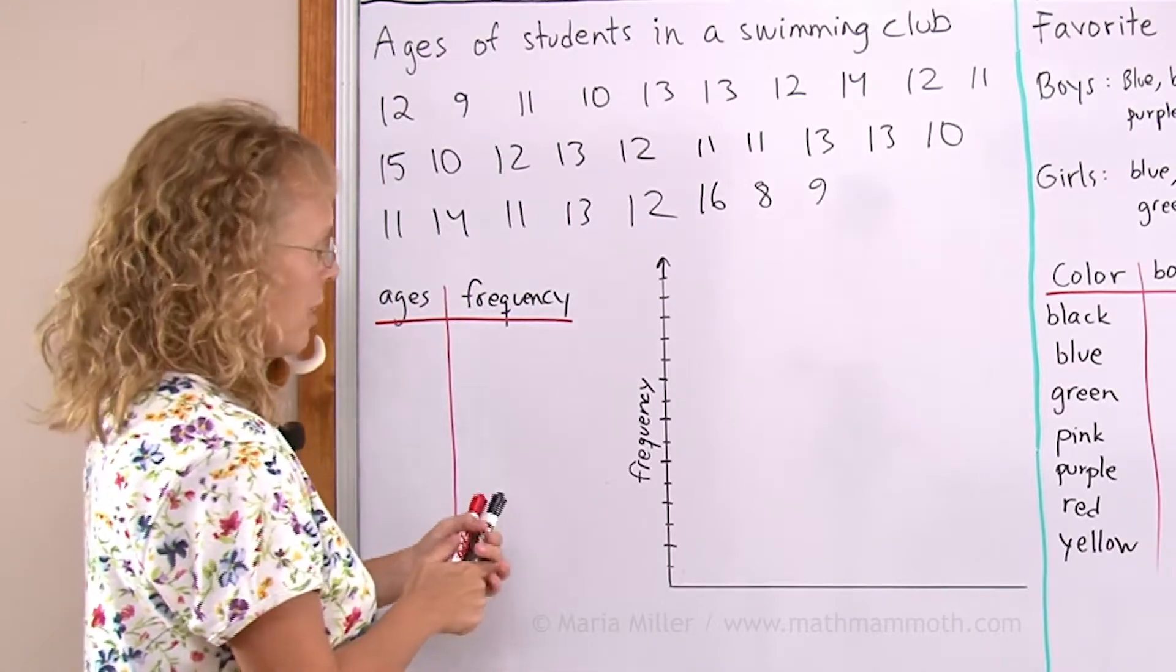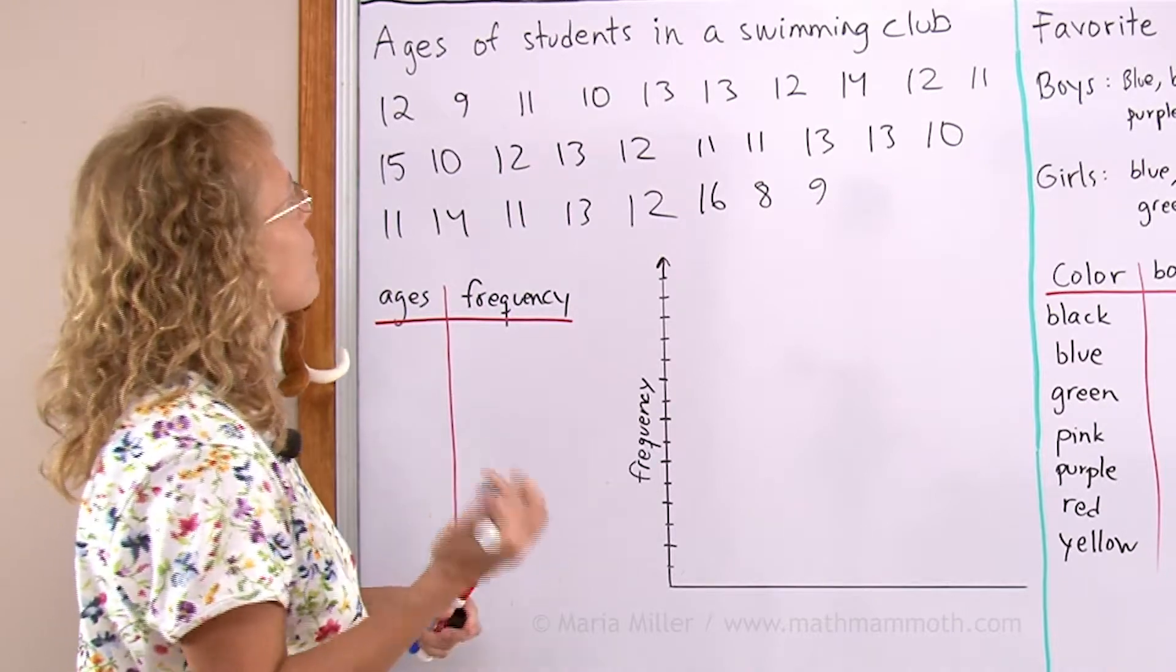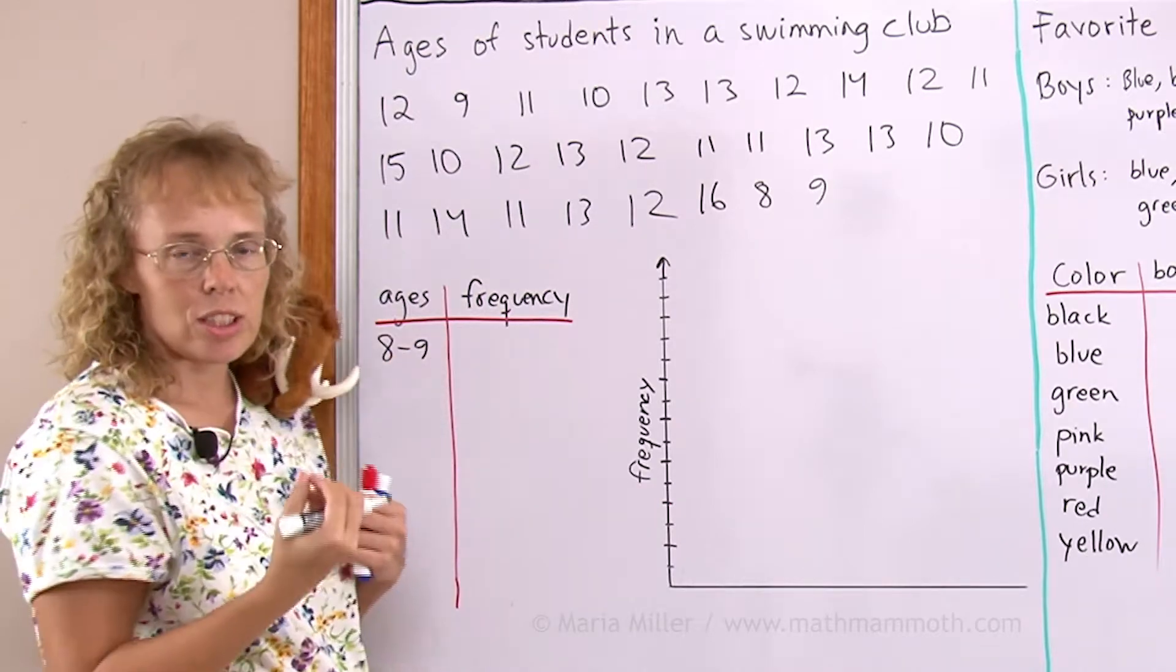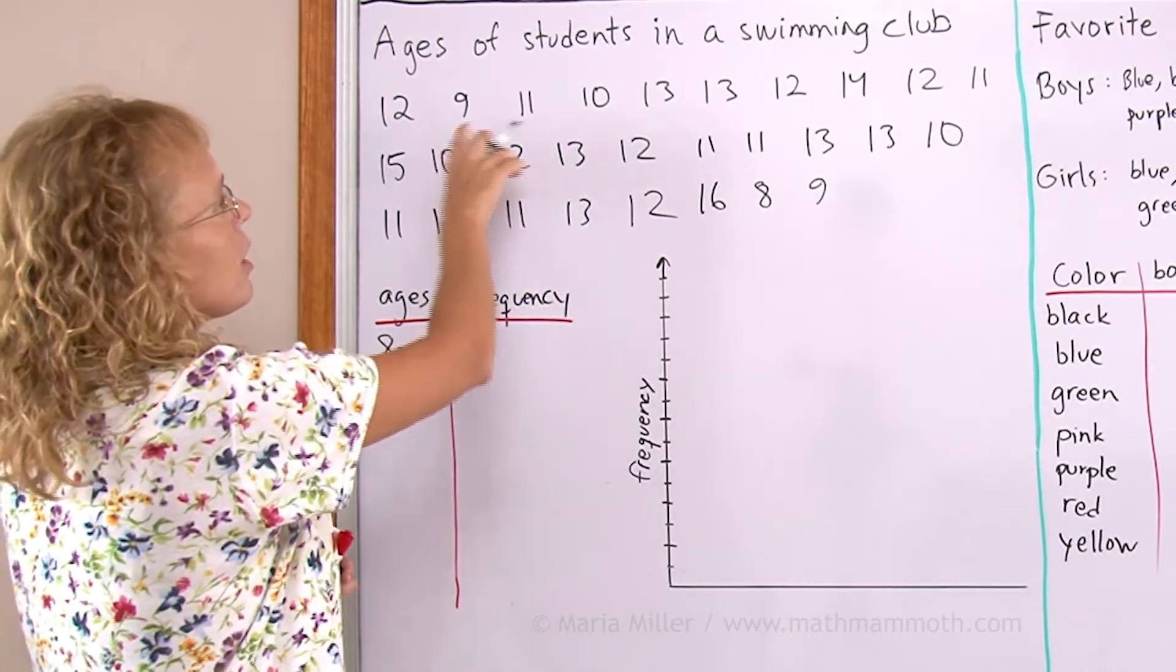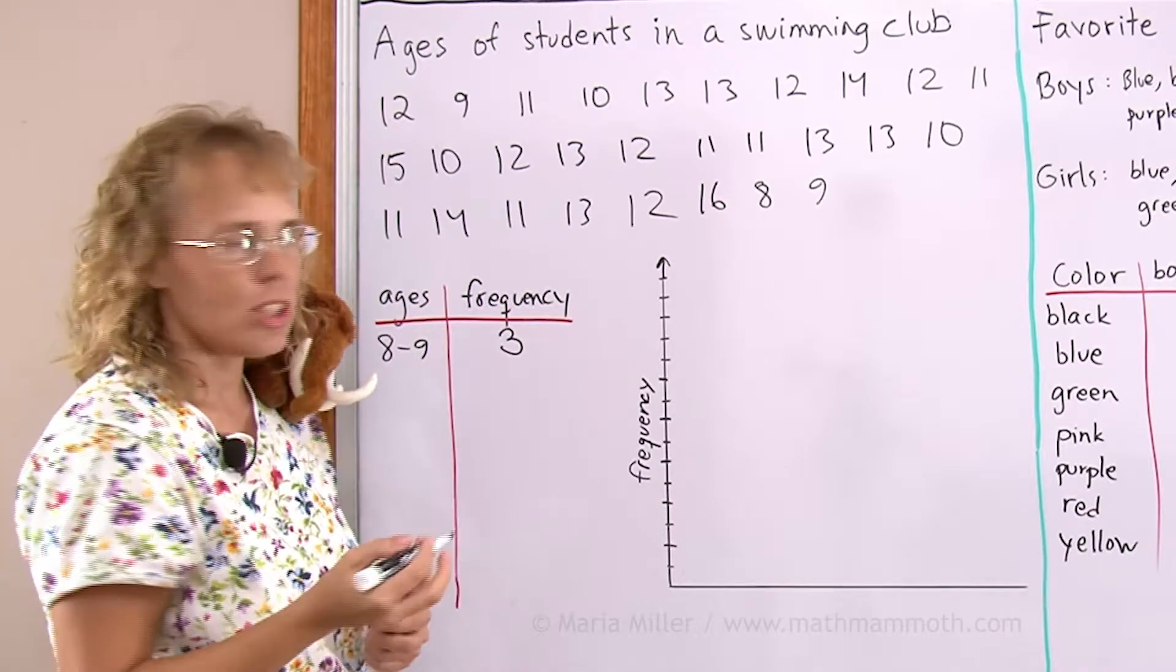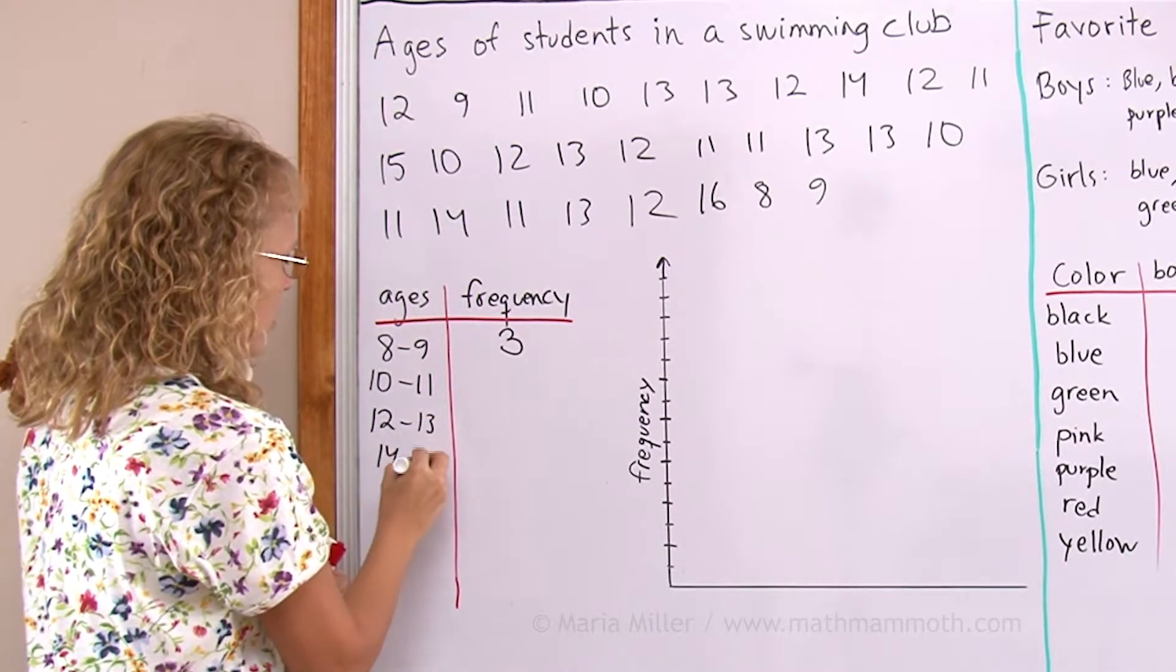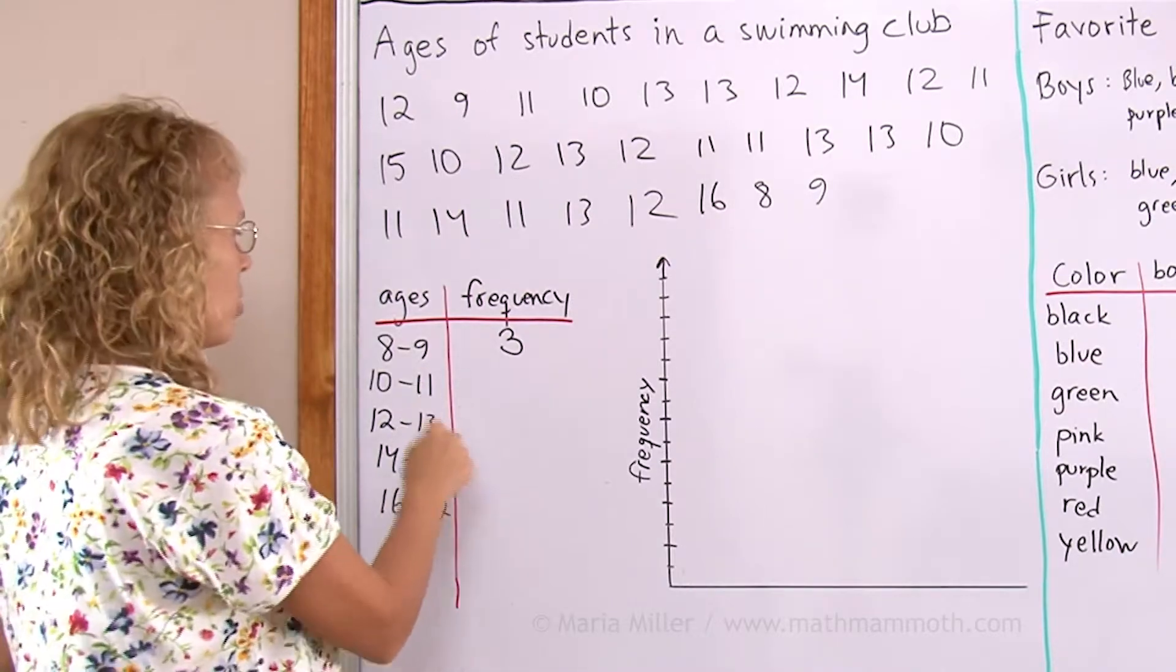And there's of course many ways to group the data, many ways to make the bins. This time I'm going to make it so that we will have two neighboring ages grouped together. So 8 and 9, however many we have here. There's three children that have ages 8 or 9. And then here would go 10 to 11, 12 to 13, 14 to 15 and then 16 to 17. And then we count now how many goes to each bin.